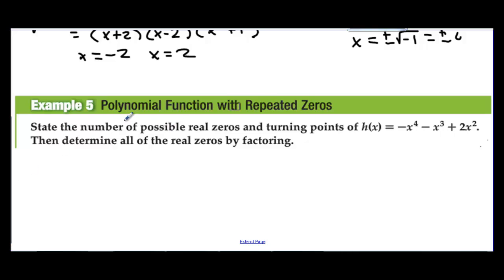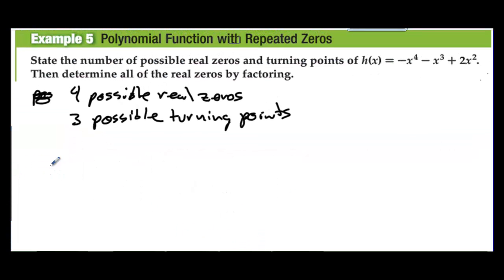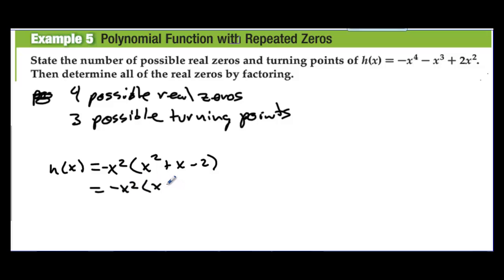Polynomial function with repeated zeros. State the number of possible real zeros and turning points of h(x), then determine all real zeros by factoring. We have 4 possible real zeros and 3 possible turning points. Factoring out −x²: −x²(x² − x + 2) — actually factoring as −x²(x + 2)(x − 1) — gives real zeros x = 0, x = −2, and x = 1.